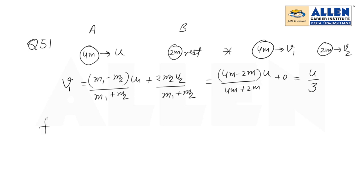Now, fractional loss in kinetic energy of body A is kinetic energy initial minus kinetic energy final upon kinetic energy initial.